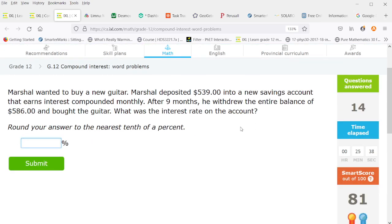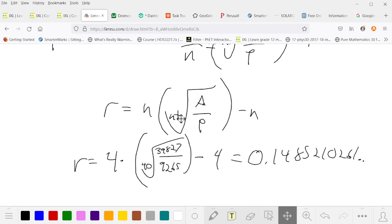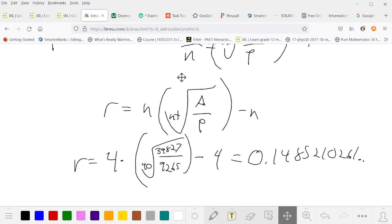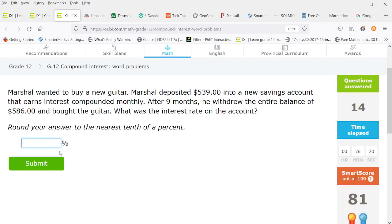Okay so Marshall wanted to buy a new guitar. He deposited 539 to a new savings account earning interest compounded monthly. What's the interest rate on this account? So he withdrew it after nine months. So we need the ninth root of the 586 over 539. Now this gets multiplied by the 12 months and we subtract 12. So we have 0.11199 or in this case to the nearest 10th 11.2 percent.